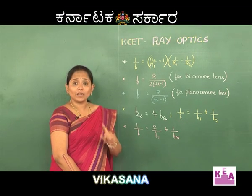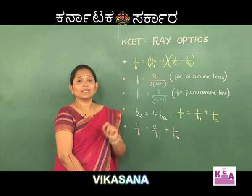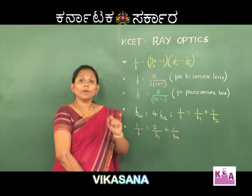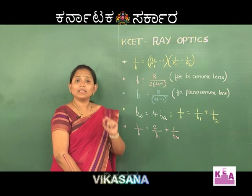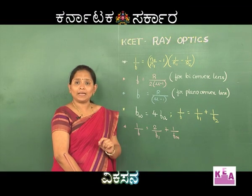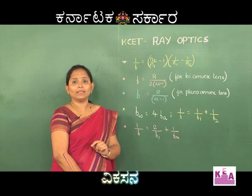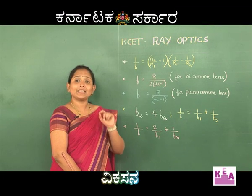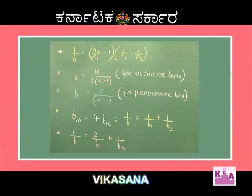Students, I would also like to tell you about the power of a lens. Power of a lens is defined as the reciprocal of the focal length, and its SI unit is the diopter.